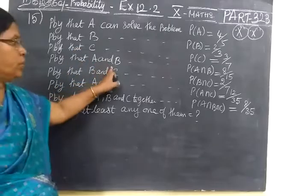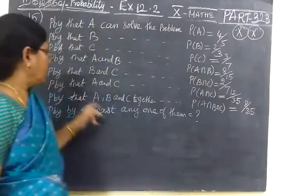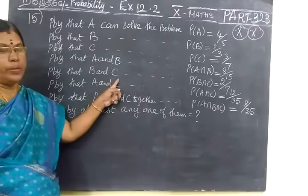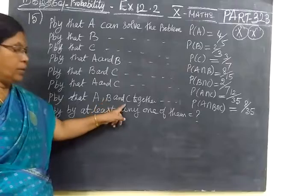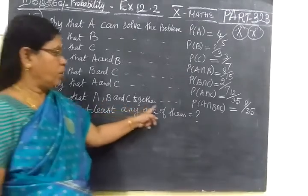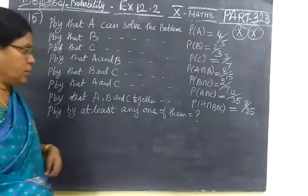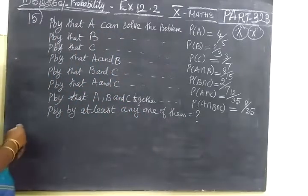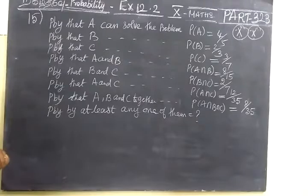Then A and B together can solve the problem, so P of A intersection B. Then B and C together solving the problem. Then A and C together. Then all the 3 combined together solving the problem, so P of A intersection B intersection C. And we are going to find probability by at least any one of them.